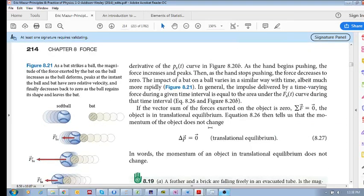Now, of course, if the vector sum of the forces exerted on an object is zero, then the object is in translational equilibrium, and your delta P is equal to zero. Cheers.